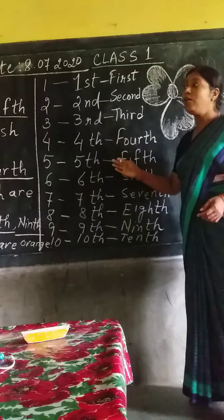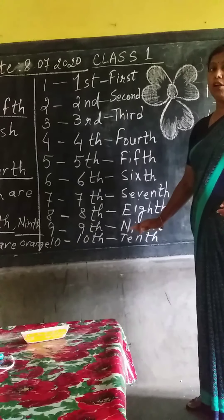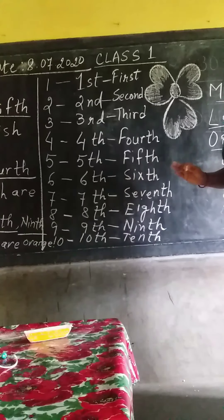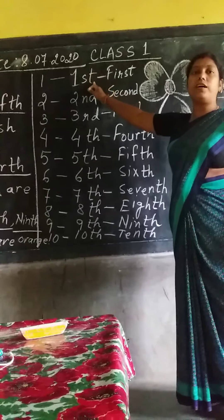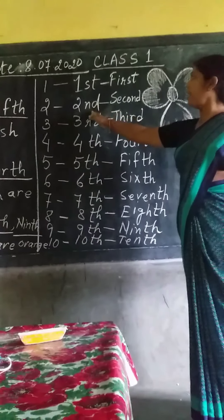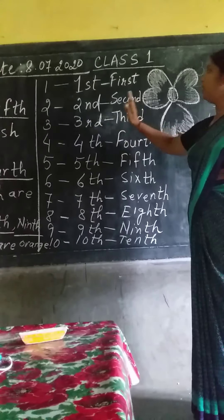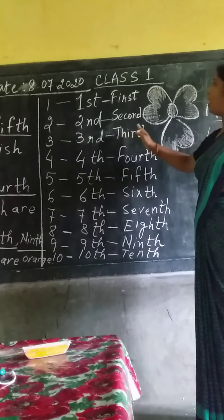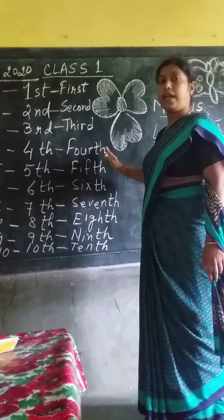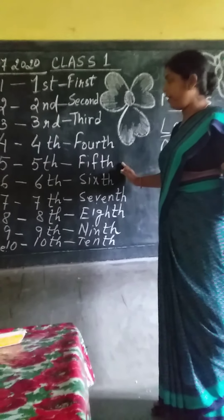But here we are going to learn about ordinal numbers. You see here: first — F-I-R-S-T. Second — S-E-C-O-N-D. Third — T-H-I-R-D. Fourth — F-O-U-R-T-H. Fifth — F-I-F-T-H.